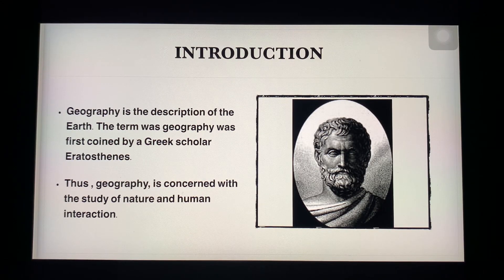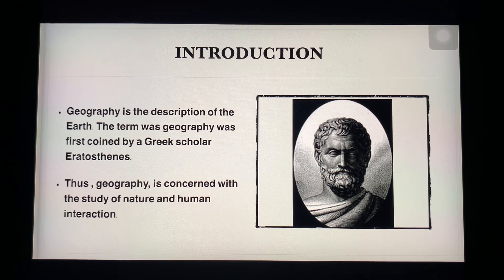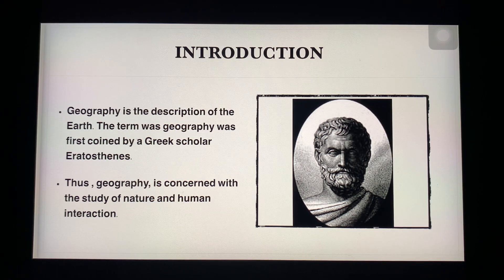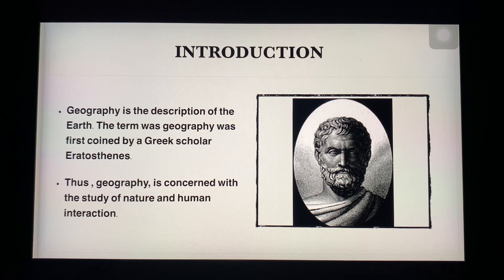Geography is the description of the earth. The term geography was first coined by a Greek scholar, Eratosthenes. The word geography is a combination of two Greek words: geo means earth and graphos means description. So this first Greek scholar described geography as the description of the earth — geography is describing the earth.